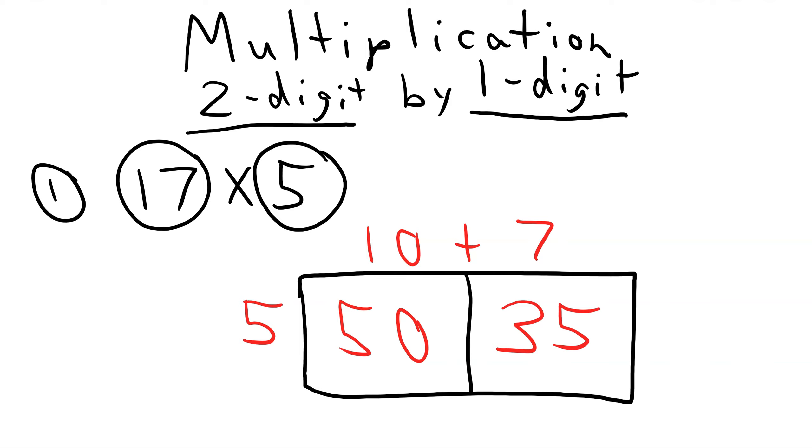Our last step is to add 50 and 35. We can add using the traditional method. I will add over here. 50 plus 35 equals 0 plus 5 is 5, 5 plus 3 is 8, 85. So the answer to our problem is 85. I'll put a box around it to show that it is my answer.